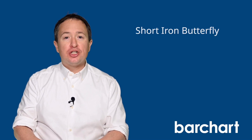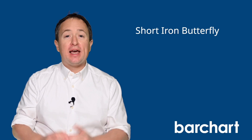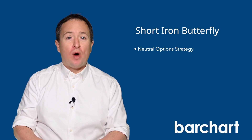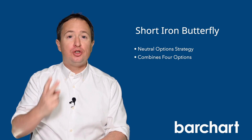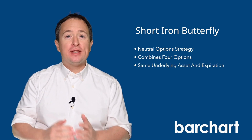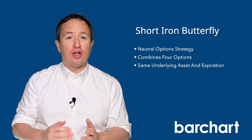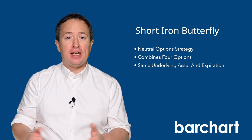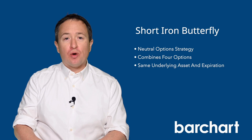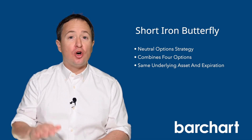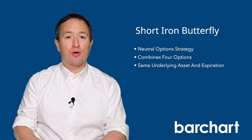The short iron butterfly is a neutral option strategy that requires four options, two of which are at the same strike price on the same underlying asset and with the same expiration date. The strategy works best if you anticipate that the asset will trade with low volatility until expiration.